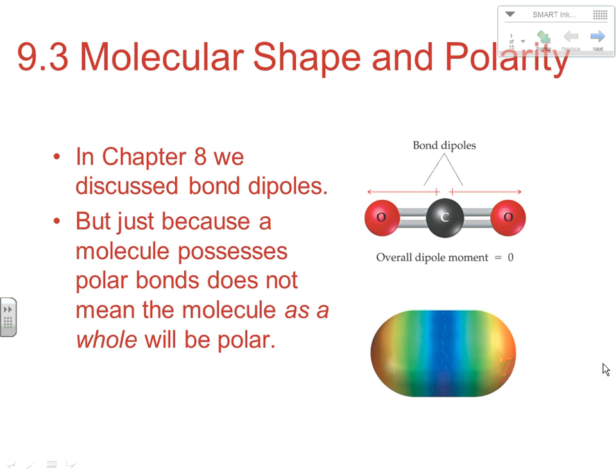Welcome to AP Chemistry at Heineken High School. I'm Brian Brown and today we'll be taking a look at two sections within chapter 9 dealing with molecular shape, polarity, and then we introduce valence bond theory, which gets into how molecules bond.